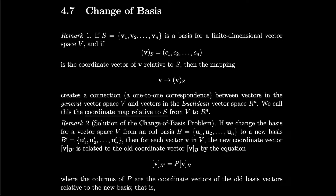Section 4.7, Change of Basis. If S equals V1 through Vn is a basis for a finite dimensional vector space V, and Vs equals C1, C2, Cn is the coordinate vector of V relative to S, then the mapping V to Vs creates a one-to-one correspondence between vectors in the general vector space V and vectors in the Euclidean vector space Rn. We call this the coordinate map relative to S from V to Rn. Basically, we can identify real-number coordinates for any vector in an arbitrary vector space via this coordinate map.